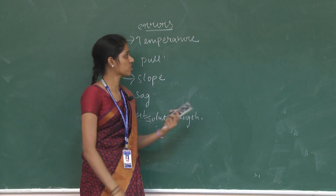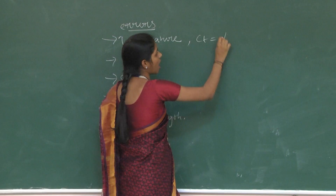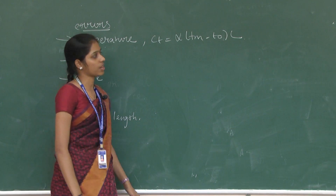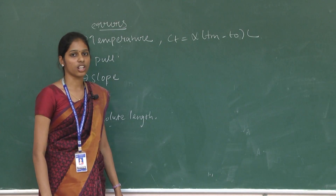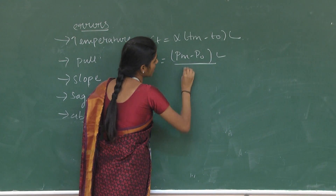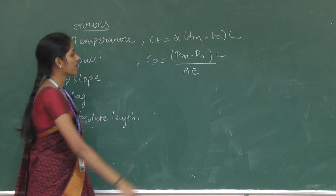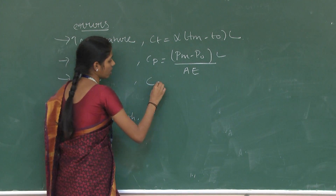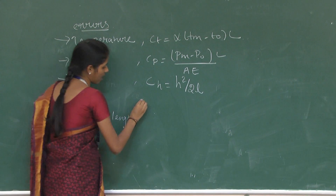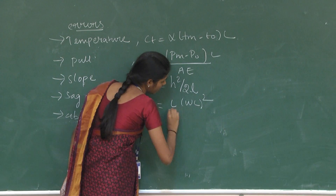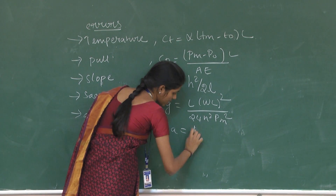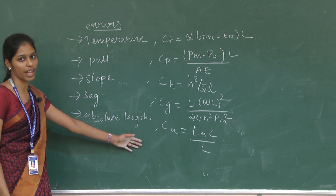The correction factors for chaining are as follows. Temperature correction: C_T = α(T_m − T₀)L, where T_m is the temperature at measurement, T₀ is the standard temperature, L is the original chain length, and α is the coefficient of linear expansion. Pull correction: C_P = (P_m − P₀)·L / (A·E), where P_m is the pull during measurement and P₀ is the standardized pull. Slope correction: C_H = h² / 2L, where h/L is the slope. Sag correction: C_S = L·(WL²) / (24·N²·P_m²). Absolute length correction: C_A = (L_m·C) / L.